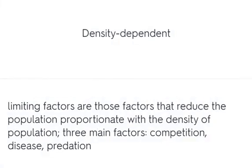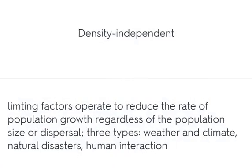Density-dependent limiting factors reduce the population proportionate with population density. The three main factors are competition, disease, and predation. Density-independent limiting factors operate to reduce the rate of population growth regardless of population size or dispersal. Three types are: weather and climate, natural disasters, and human interaction.